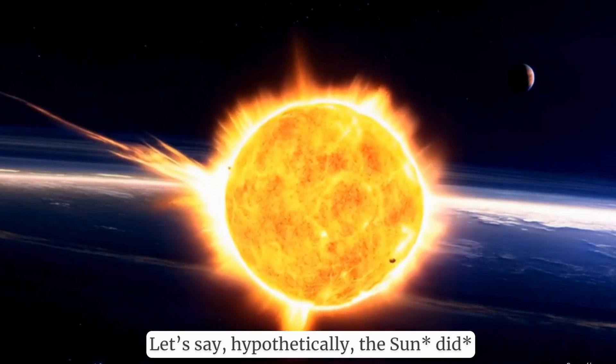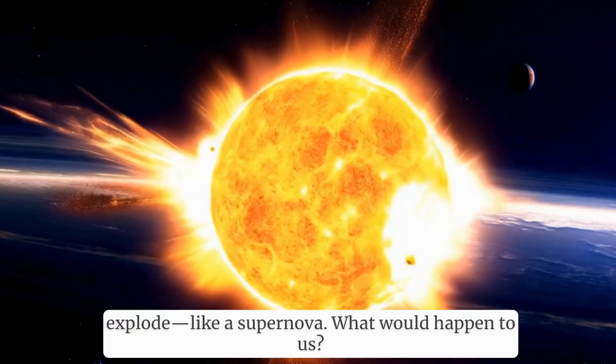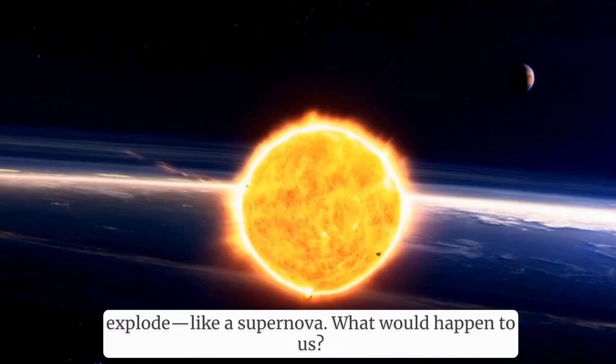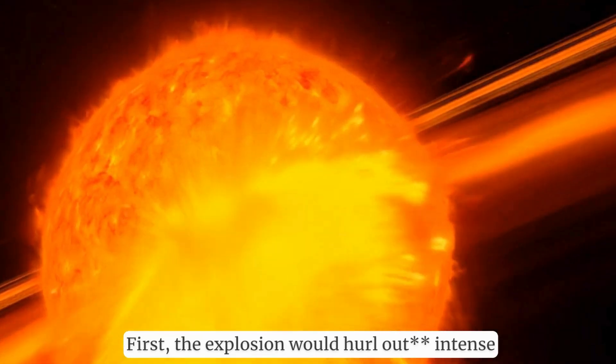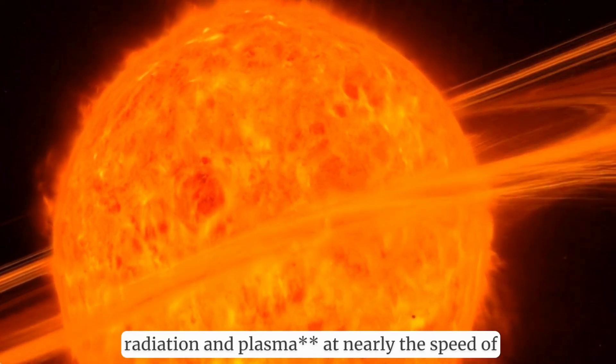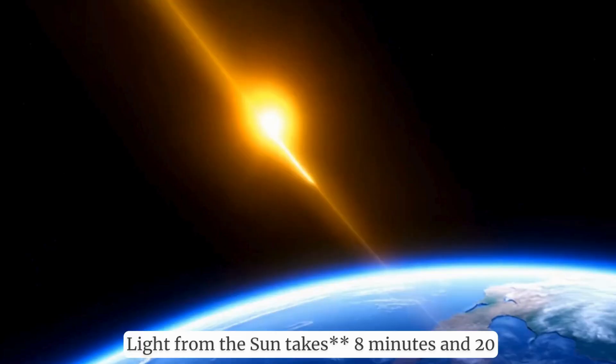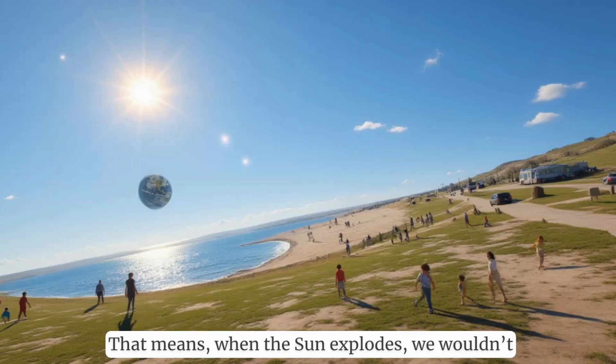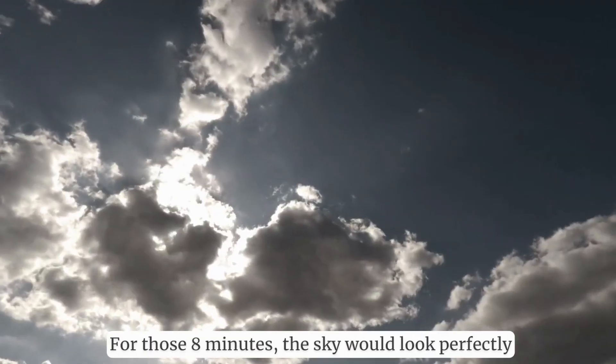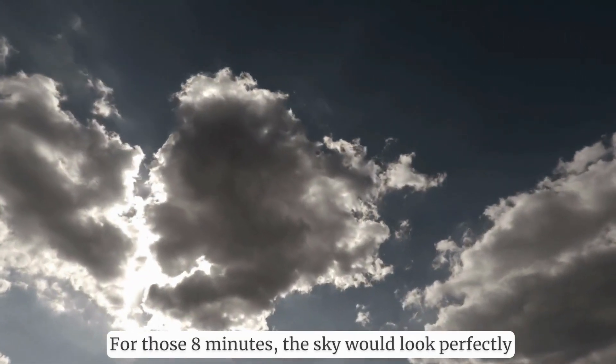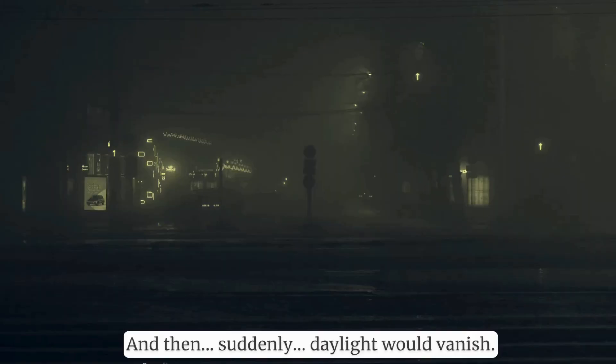Let's say, hypothetically, the Sun did explode, like a supernova. What would happen to us? First, the explosion would hurl out intense radiation and plasma at nearly the speed of light. But here's the catch: light from the Sun takes eight minutes and 20 seconds to reach Earth. That means when the Sun explodes, we wouldn't know immediately. For those eight minutes, the sky would look perfectly normal. Life would go on, completely unaware. And then, suddenly, daylight would vanish.